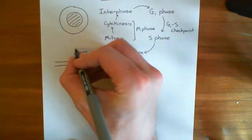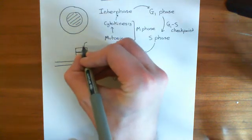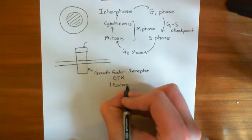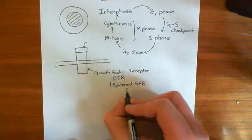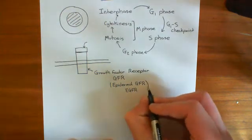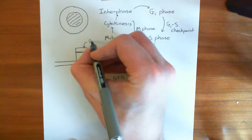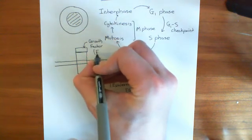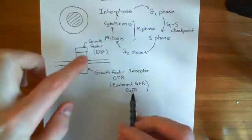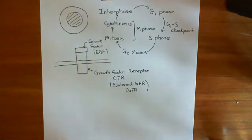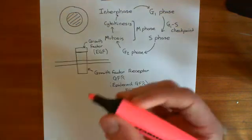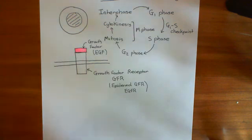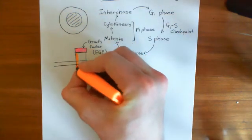When the growth factor comes along, it's going to bind to its growth factor receptor. If this were the epidermal growth factor receptor — EGFR — then the ligand would be the epidermal growth factor, EGF. But keeping it general, we'll just say growth factor binds to the extracellular growth factor binding domain of the receptor. In pink we have the growth factor; in orange we have the growth factor receptor.